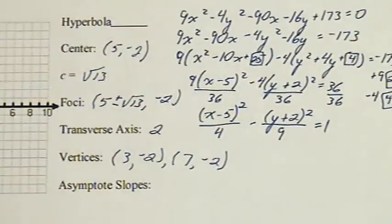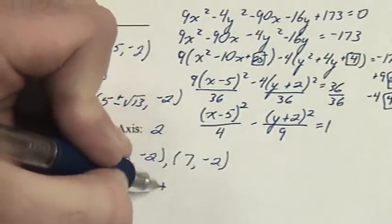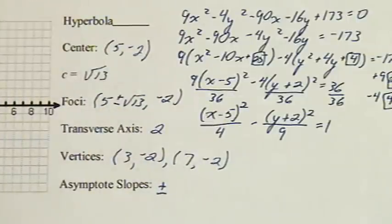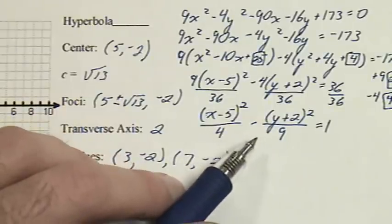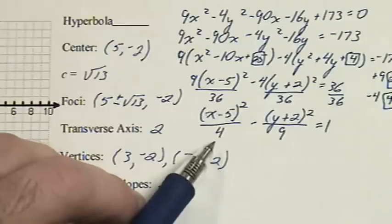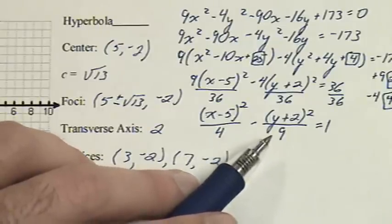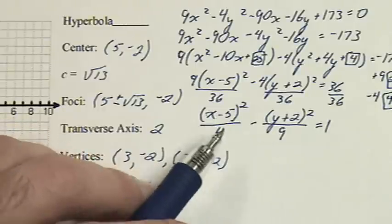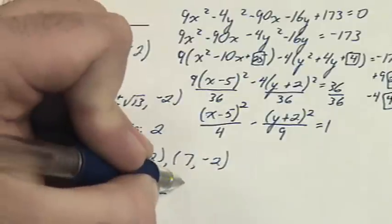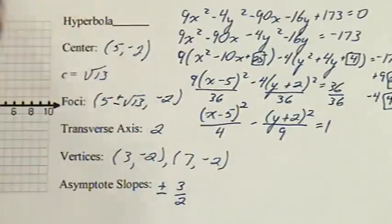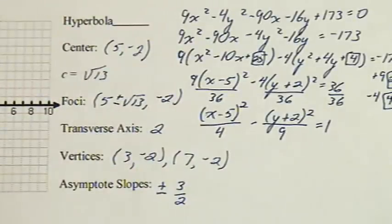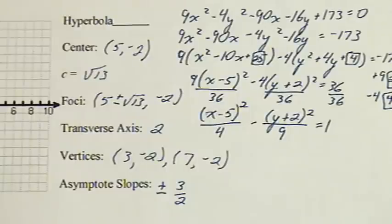The only part remaining is to find the slopes of the asymptotes. Remember, there is a positively sloped asymptote and a negatively sloped asymptote. This is a horizontal hyperbola, so it's found by doing b over a. Remember, whatever is underneath the y always goes on top. We'll have the square root of 9 over the square root of 4, which is 3 over 2. Plus minus 3 halves is the slope for the asymptotes.